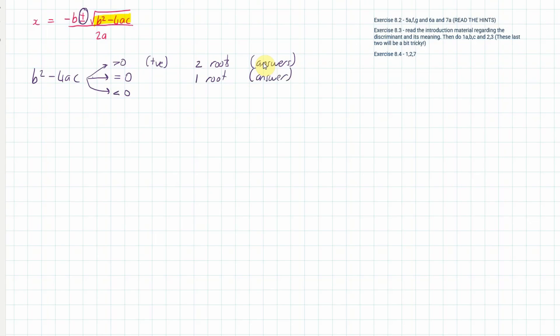If we get a negative number under the square root, we have zero roots. Your calculator will give a math error, so there are no answers. Further on in math we'll talk about complex and imaginary numbers, but at our stage we just say zero roots — no solutions.